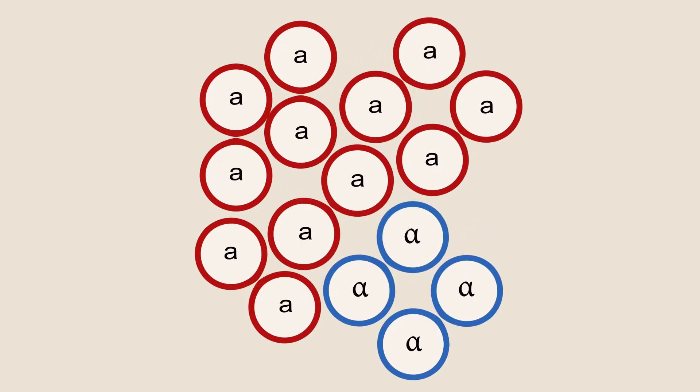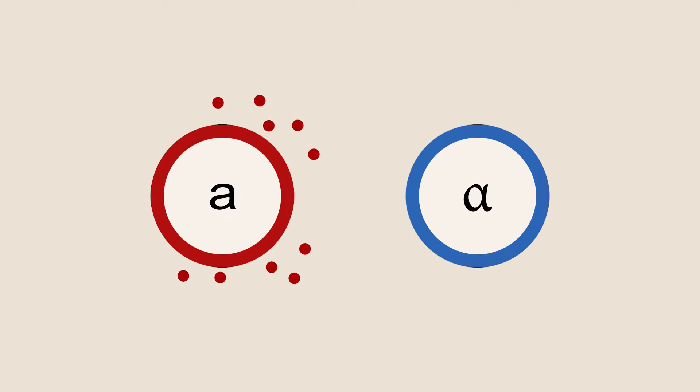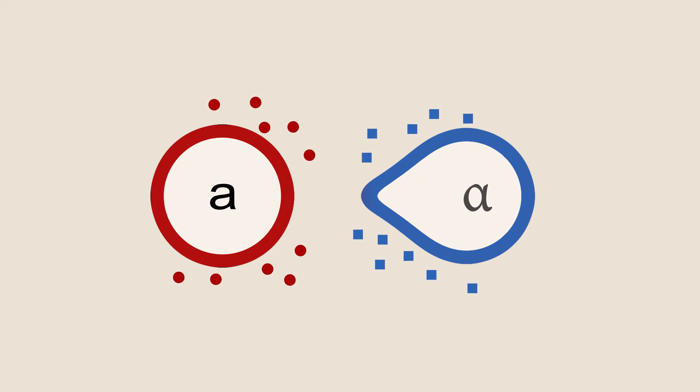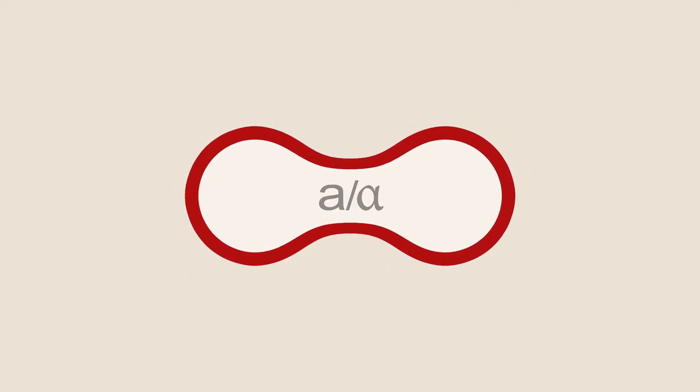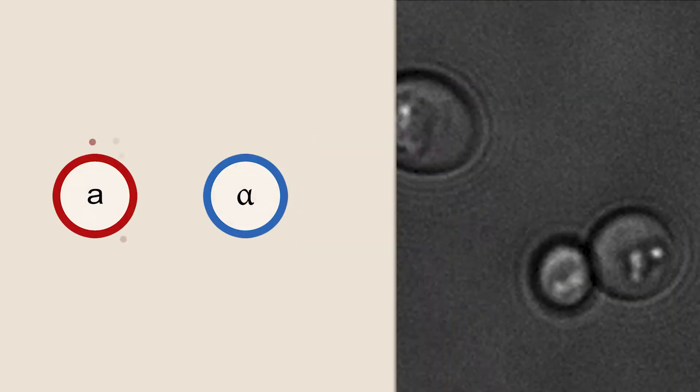A cells secrete A factor, a protein that induces alpha cells to grow a projection. Alpha cells secrete alpha factor that induces A cells to grow a similar projection. A and alpha cells fuse via these projections, forming a diploid offspring.